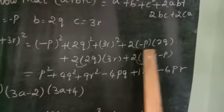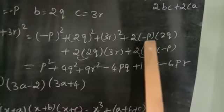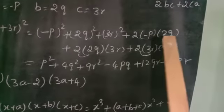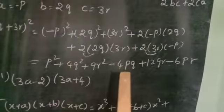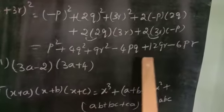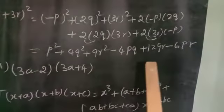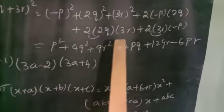Then 2 into minus p into 2q: first multiply the numbers, 2 into 2 equals 4. The sign is plus into minus, so we get minus. So the term is minus 4pq. Next, 2 into 2q into 3r: multiply the numbers, 2 into 2 is 4, 4 into 3 is 12. The signs are plus, so we get plus 12qr.